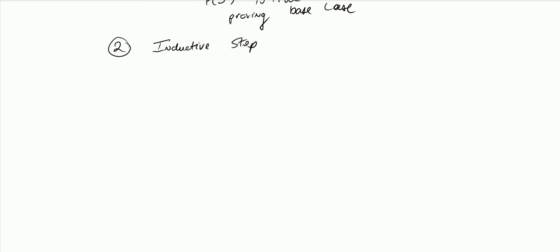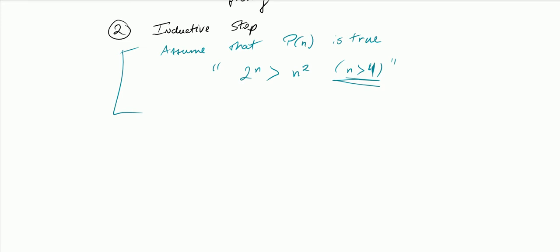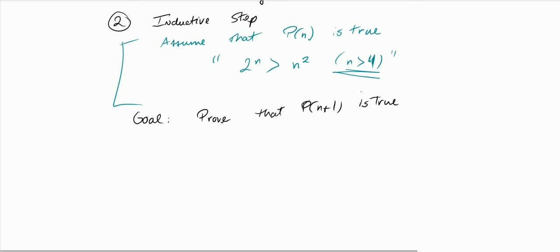In the inductive step, I assume that P(n) is true — that is, I'm assuming that 2 to the n is greater than n squared, for n greater than 4. The fact that n is greater than something is actually quite useful when doing an inequality, as you'll see soon. My goal is to prove that P(n+1) is true — in other words, to prove that 2 to the n+1 is greater than (n+1) squared.